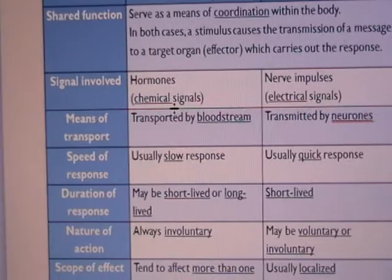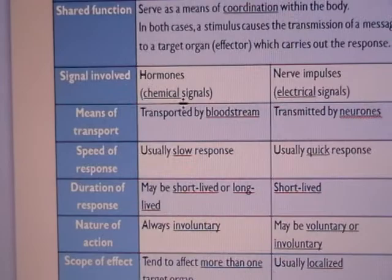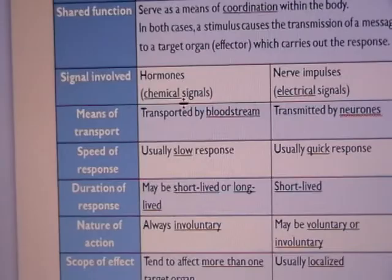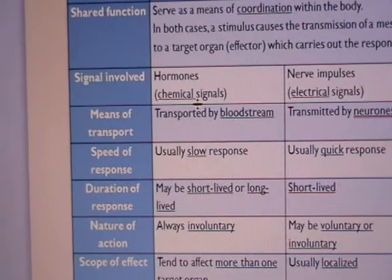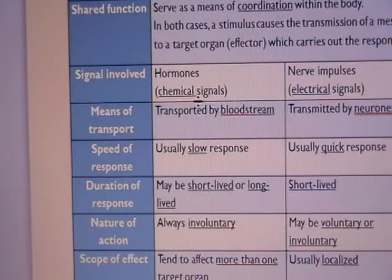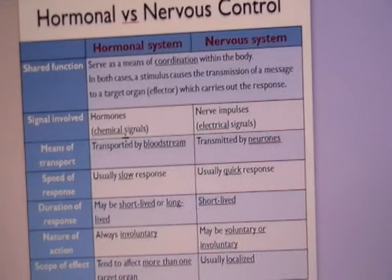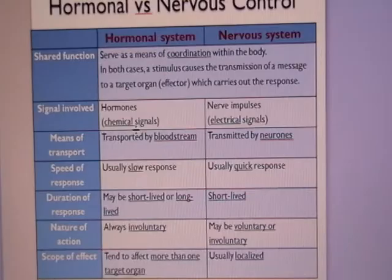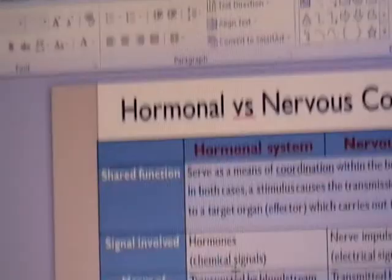In terms of speed and duration of response: in the hormonal system, the speed is usually pretty slow compared to nervous control. The duration of hormonal control can be short-lived or long-lived — some hormones can remain in your blood for a few hours, such as insulin and glucagon, if blood glucose level is not regulated immediately. However, for nervous control the response is usually short — like choosing to pick up a cup from a table. This action will be brief, and for reflex actions even shorter.